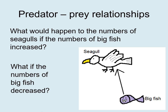Now let's think about predator-prey relationships. What would happen to the numbers of seagulls if the numbers of big fish increased? And what would happen to the numbers of seagulls if the numbers of big fish decreased? Pause the video — ideally talk to someone about it, or have a think and write some notes.